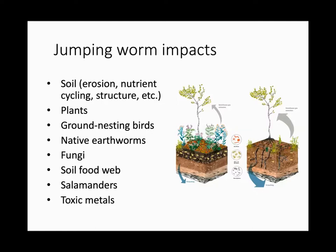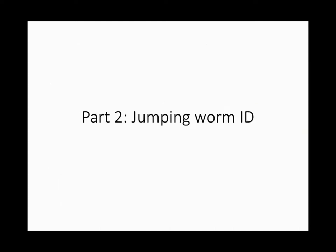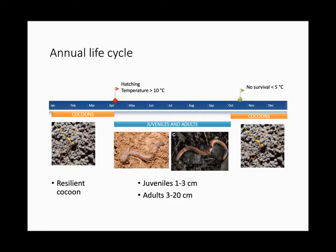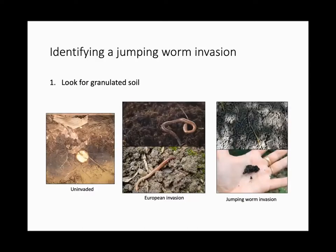Losing the forest floor habitat means losing ground-nesting birds that rely on it. We're just starting to recognize the importance of native earthworms in these forests and don't know what jumping worms are doing to those understudied native communities. They're suspected to negatively affect fungi and the rest of the soil food web, and are accumulating toxic metals. Identification is tricky partly because they're annuals — only visible during summer months, and only as adults in late summer to early fall.